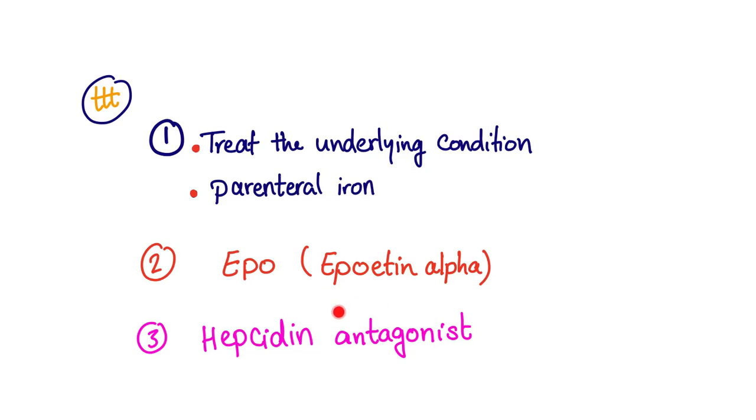EPO. The artificial form epoetin alpha. We can give them. Because sometimes they are deficient in EPO, or they cannot use it inside the body. So we can give it artificially. Hepcidin was the third theory. So they are trying to develop hepcidin antagonists these days to help with this condition.